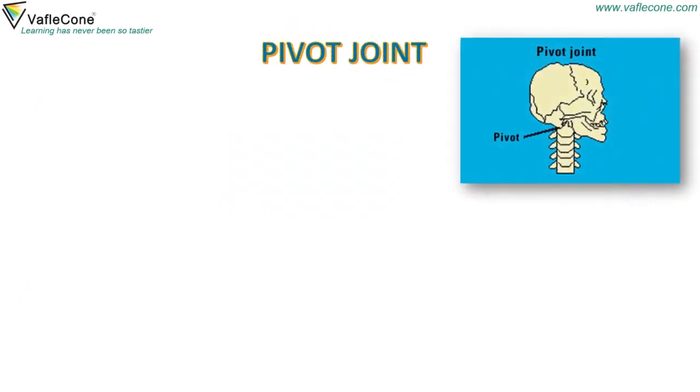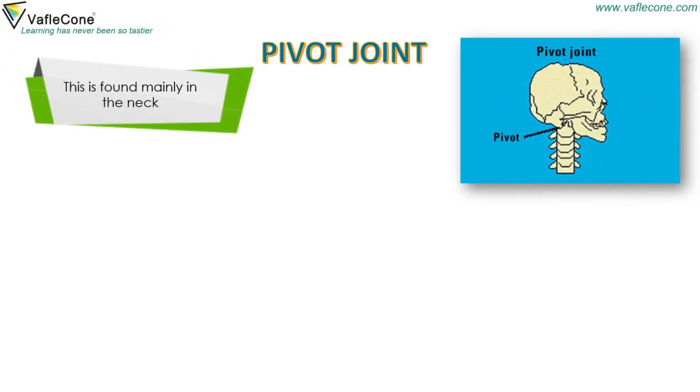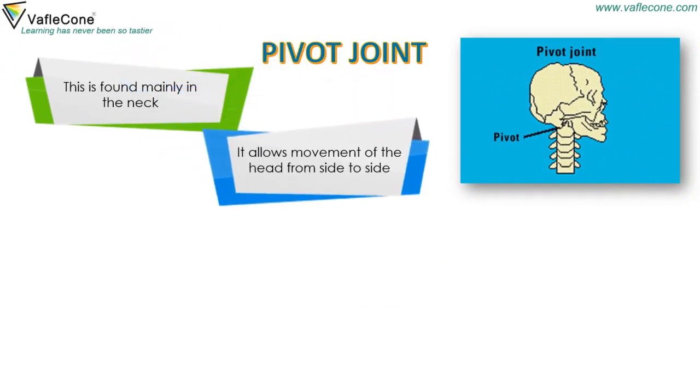Pivot Joint. This is found mainly in the neck. It allows movement of the head from side to side.